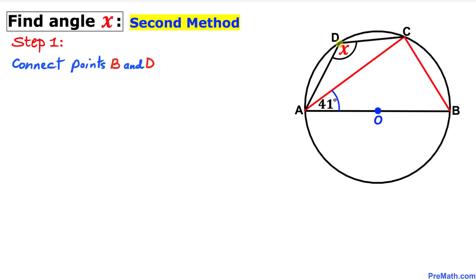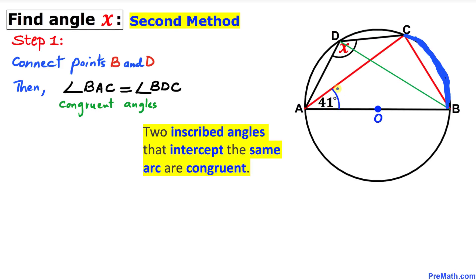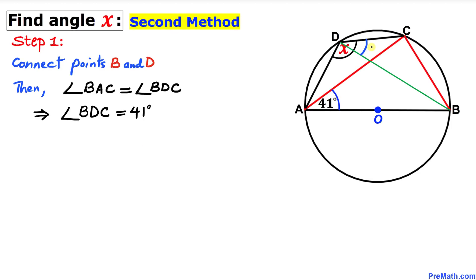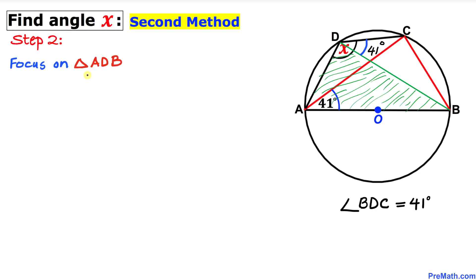In the first step of method two, let's connect points B and D. We can then see that inscribed angles BAC and BDC are congruent since they intercept the same arc. Therefore, angle BDC turns out to be 41 degrees as well.